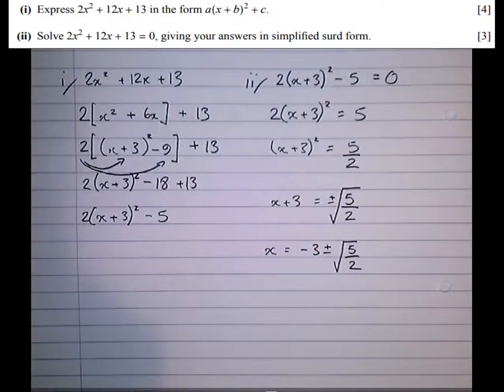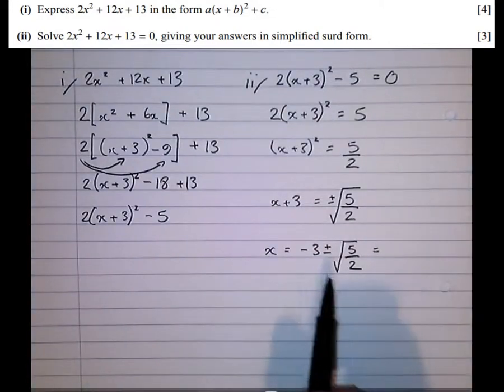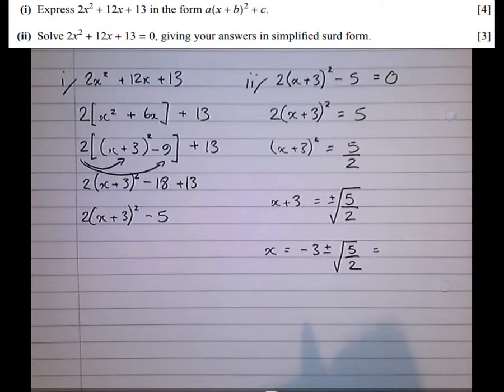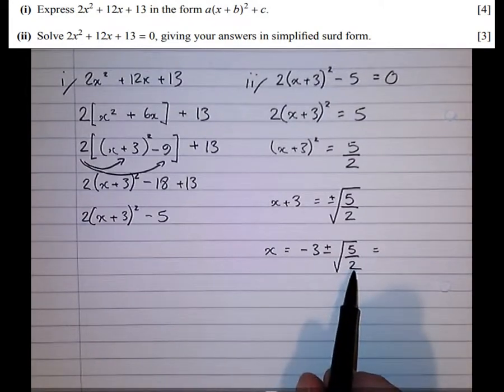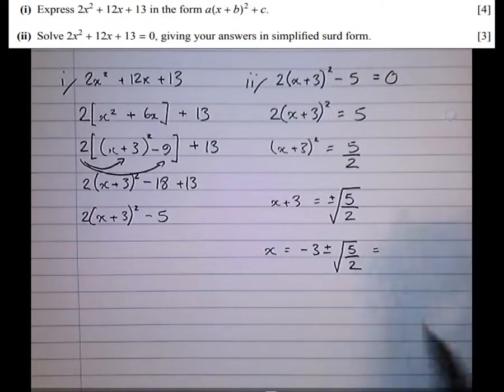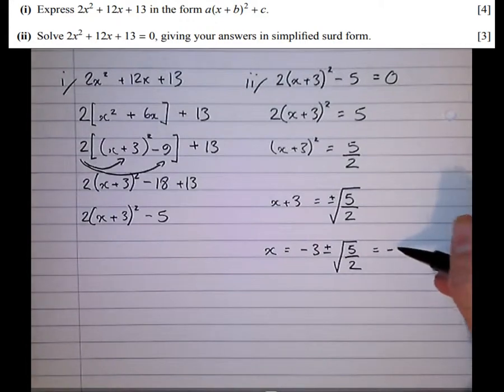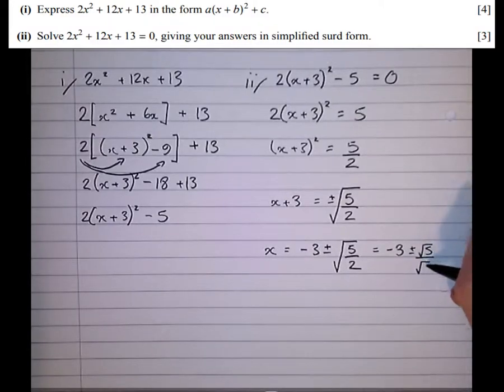But we haven't yet fulfilled the requirements of the question. Because what it's asking us to do is give the answer in simplified surd form. And this has a surd on the denominator, it's not yet simplified surd form. What we can do is split this up into √5/√2.